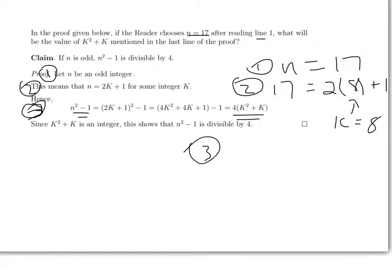n squared minus 1, again remember my n is 17. Once I've chosen n equals 17, then that's going to be my n through the whole proof. When I've chosen k equals 8, it's going to be my k through the whole proof as I'm tracing it.